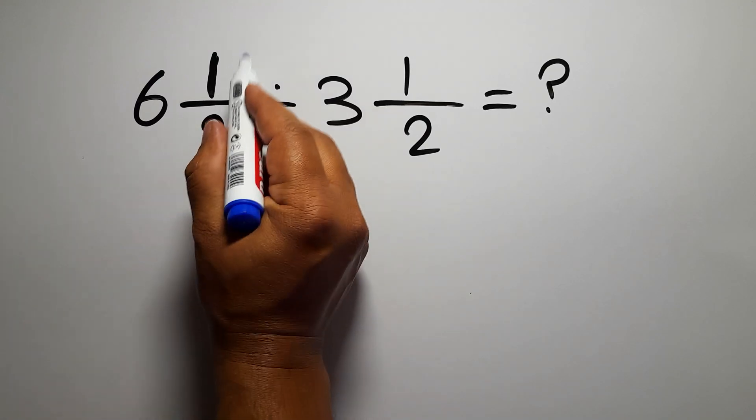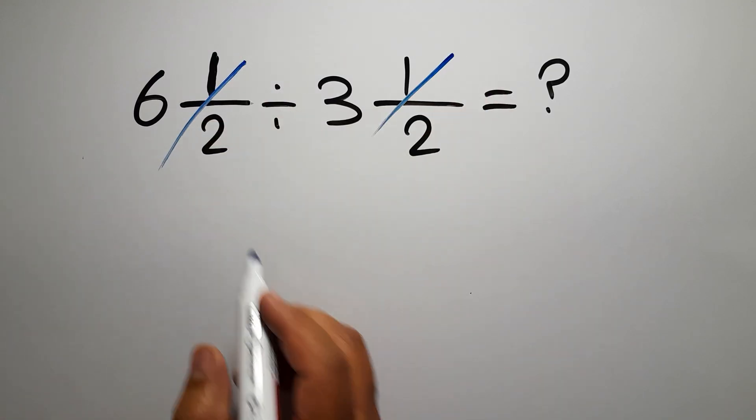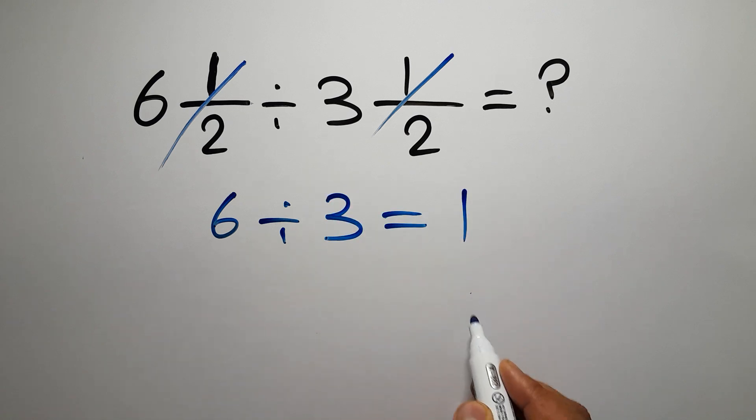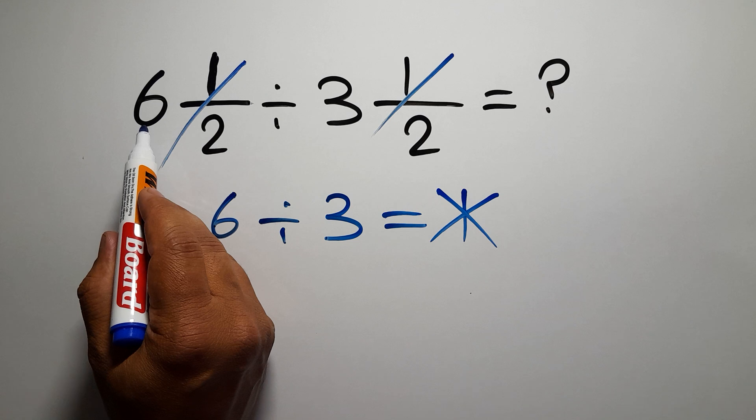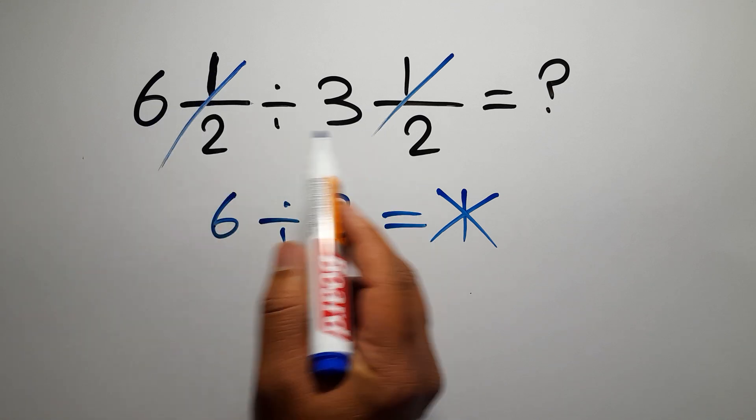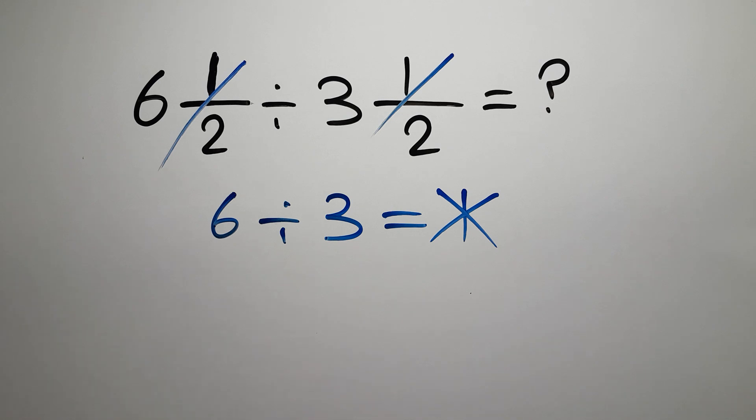This one-half and this one-half can cancel each other. Also, we have just 6 divided by 3, which gives us 1. But this answer is not correct. First, we have to convert these two mixed numbers to improper fractions.